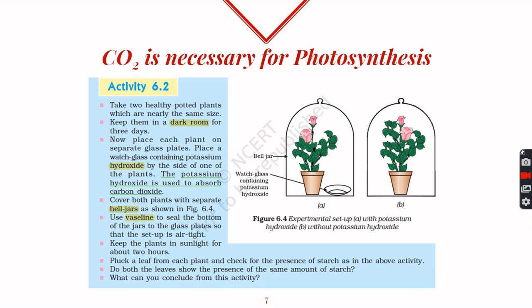After keeping both plants under sunlight for a few hours, we pluck a leaf from each and perform the starch test. The leaf of plant B gives a positive starch test and turns blue-black, while the leaf of plant A does not turn blue-black because it received no carbon dioxide and did not perform photosynthesis. This proves that carbon dioxide is necessary for photosynthesis.